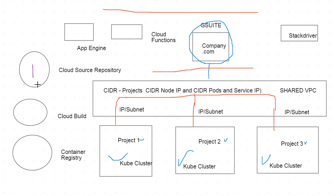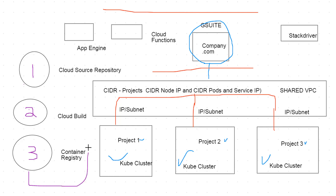Step number one is to get our source code. Step number two, we have to build and test — we probably want to consider Cloud Build, where we'll build and test our code. Then we need to manage our versions, and we probably want to consider Container Registry. We may also want to consider deploying something like Spinnaker in our VPC.